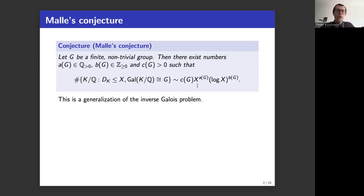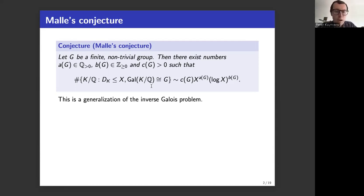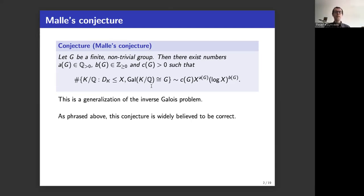Even showing that the set is not empty — that at least one number field with Galois group isomorphic to G exists — is currently wide open. Therefore this conjecture is incredibly difficult. Despite this, the conjecture is widely believed to be correct.